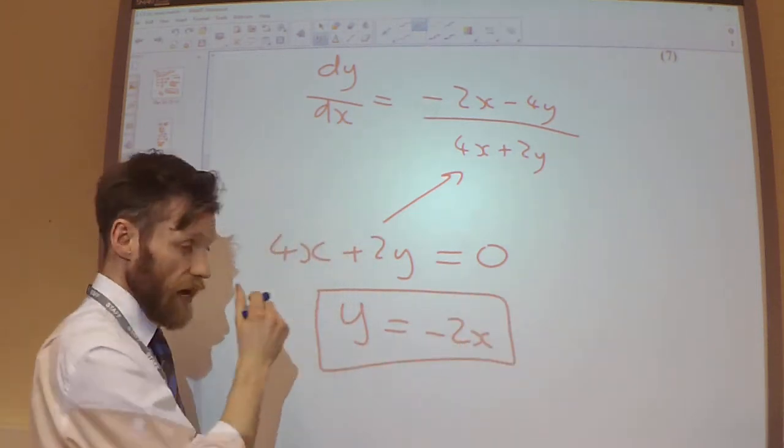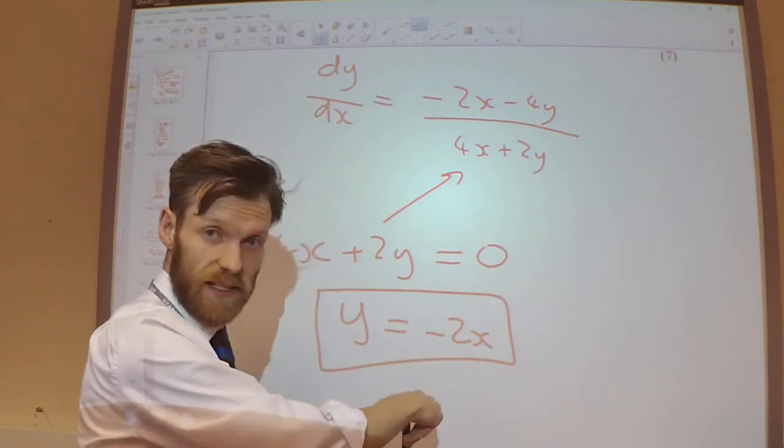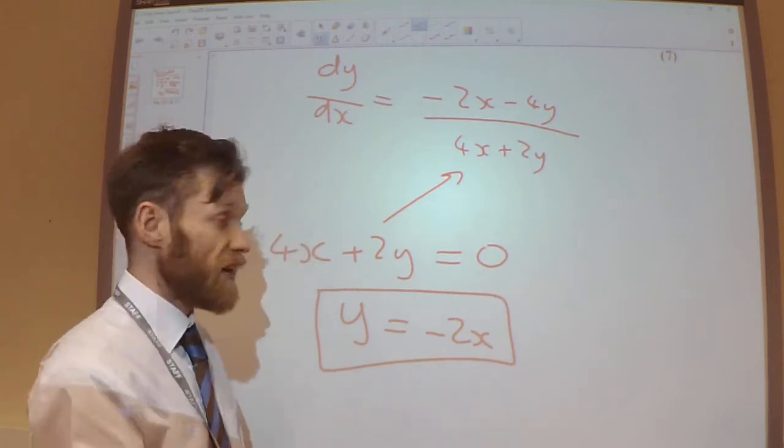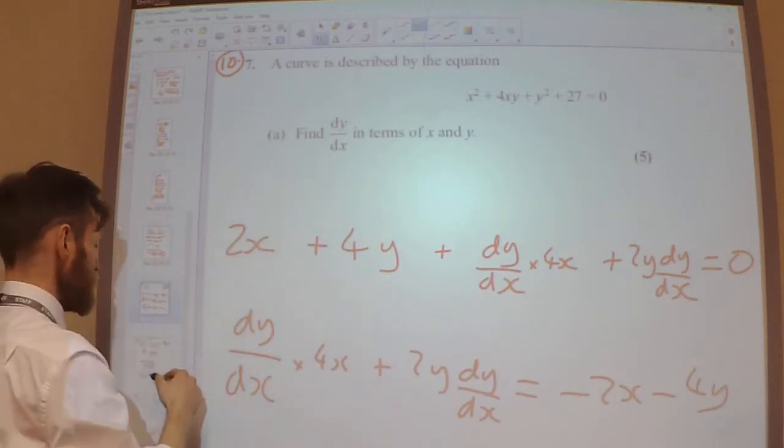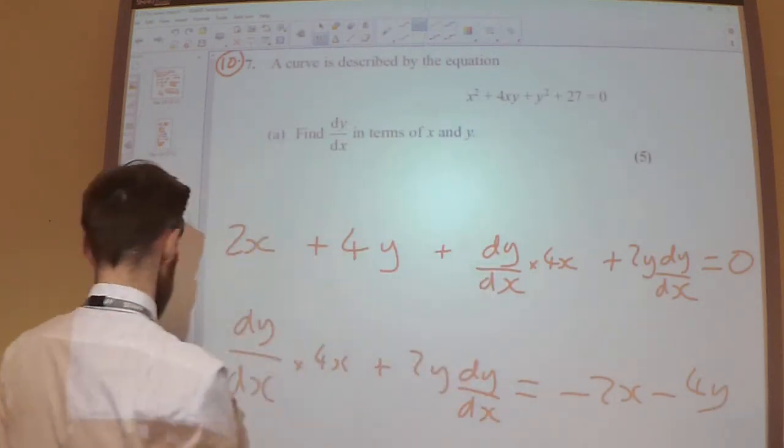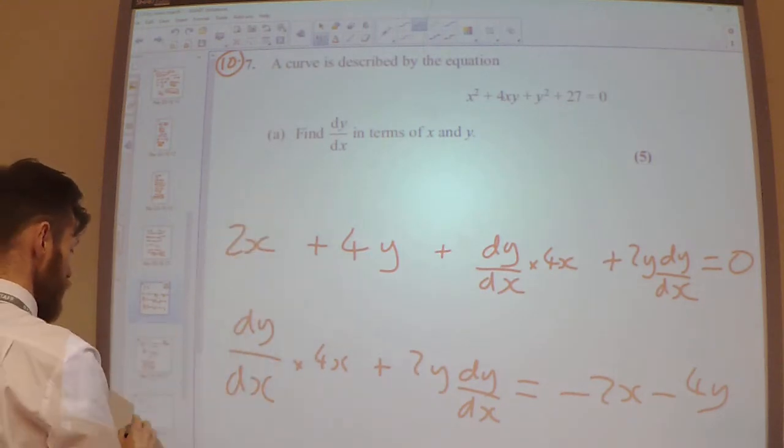So I know that my coordinate Q must lie on this line somewhere. I also know that it obeys this equation. So if I substitute y equals minus 2x into that equation, just solving them simultaneously.